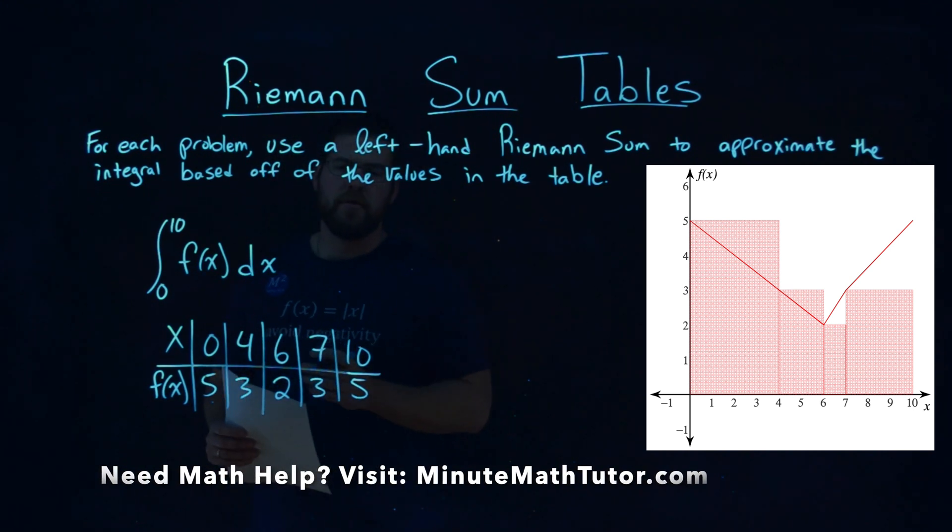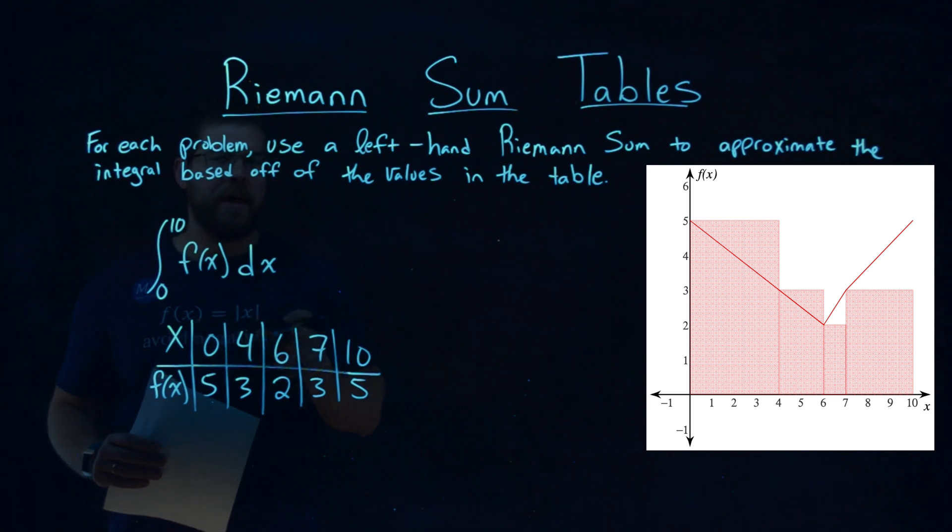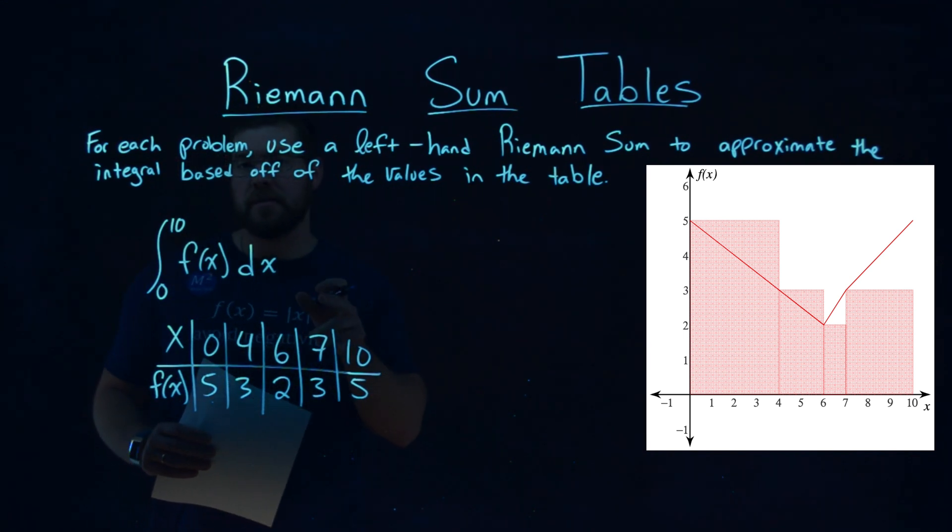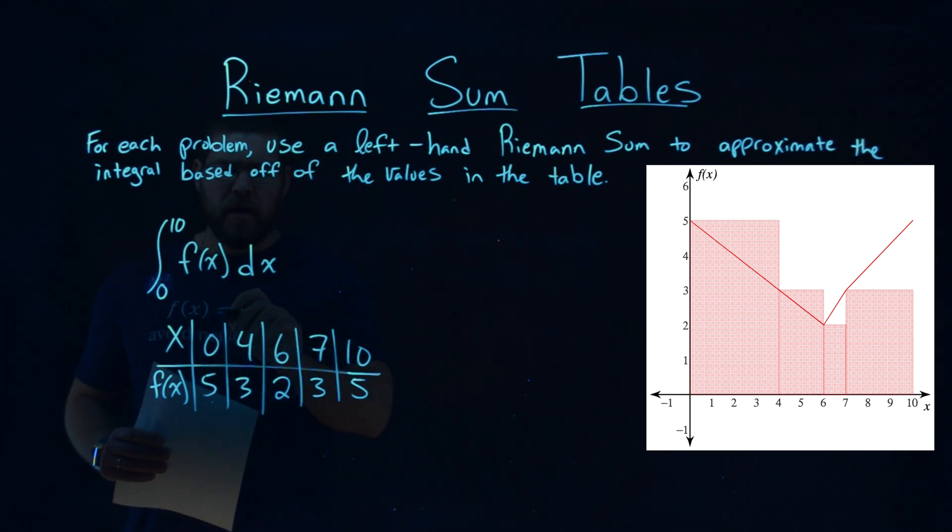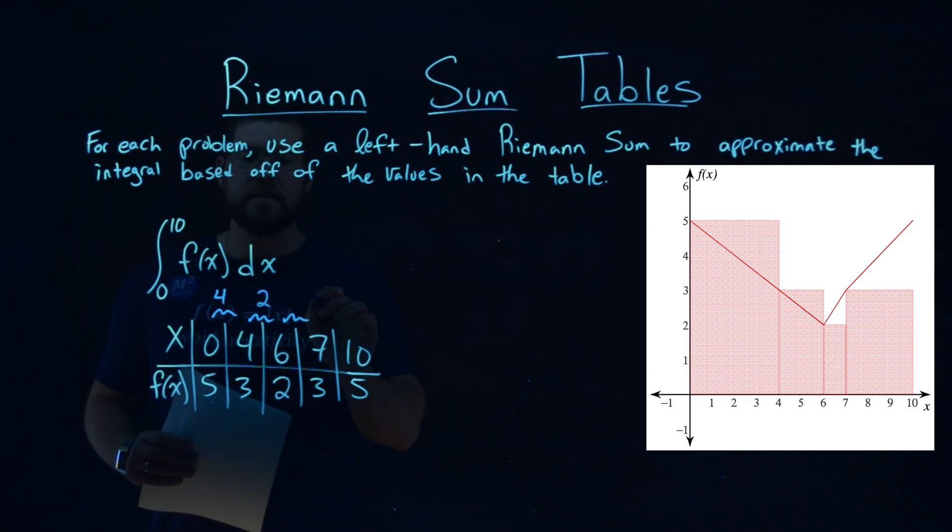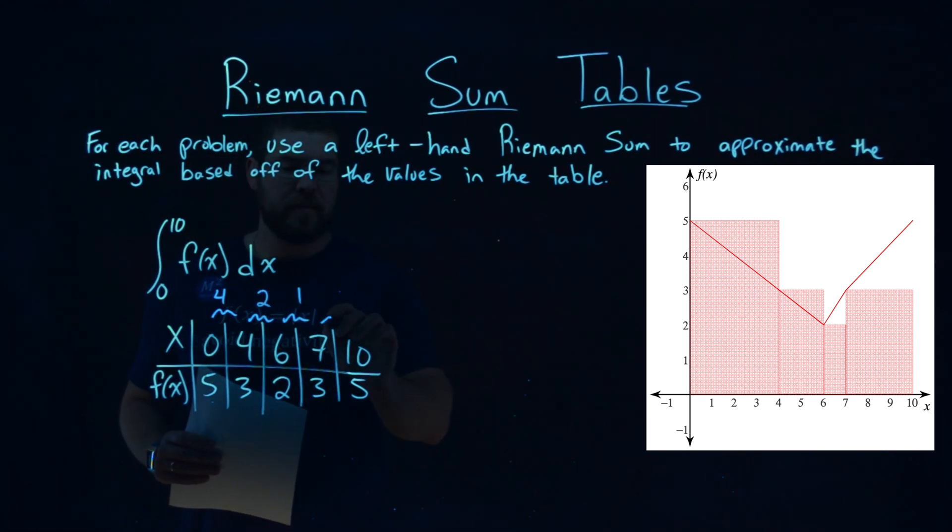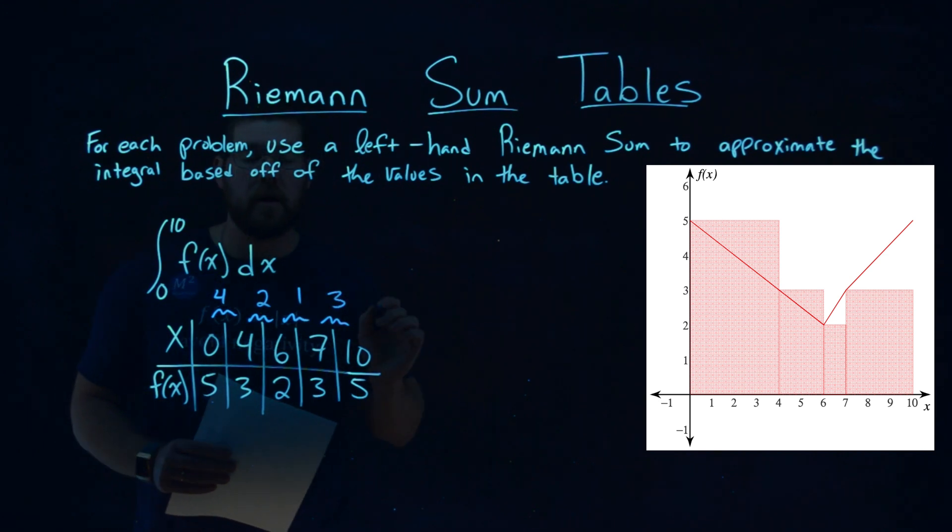The first thing I want to do is see my x values here, and I want to find the difference between each x value there. That's going to give me the width of each rectangle. So between 0 and 4, width of 4. Between 4 and 6, difference of 2. 6 and 7, difference of 1. And 7 to 10, difference of 3.